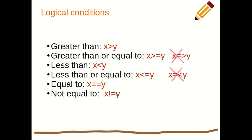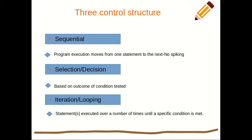Having looked at logical conditions, we move on to control structures. There are three control structures applicable in literally all programming languages: sequential, selection or decision, and iteration — sometimes referred to as looping. Sequential means program execution moves from one statement to the next with no skipping. Selection or decision is based on the outcome of a condition tested. Iteration is where statements execute repeatedly until a specific condition is met, at which point we exit the loop.